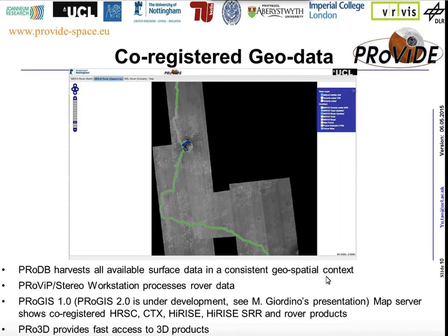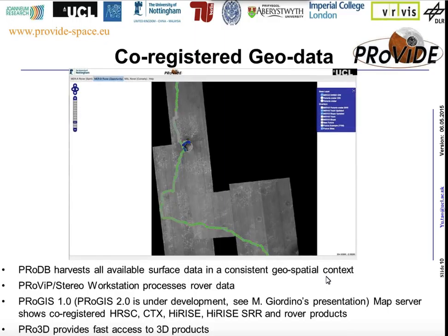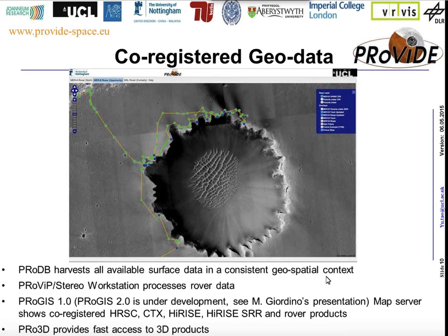This is an introduction to ProDB and the functions of each partner within this project: ProDB and ProViz for processing, and ProGIS. This is an example in ProGIS 1.0. Michela demonstrated yesterday the next version, ProGIS 2, and this is the first version.